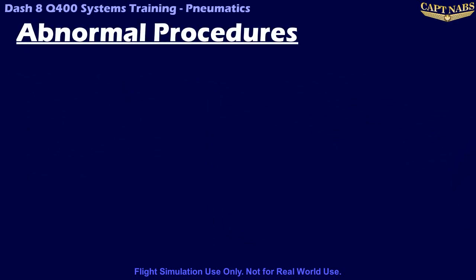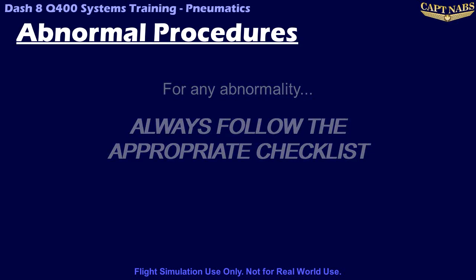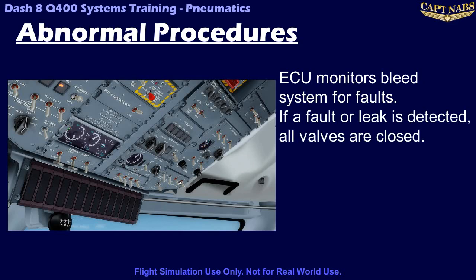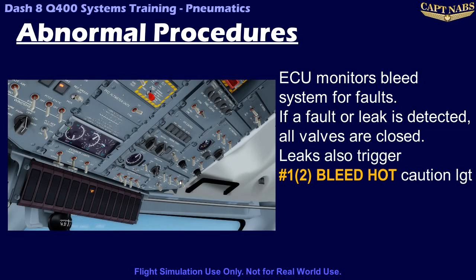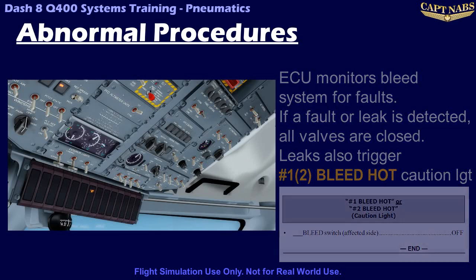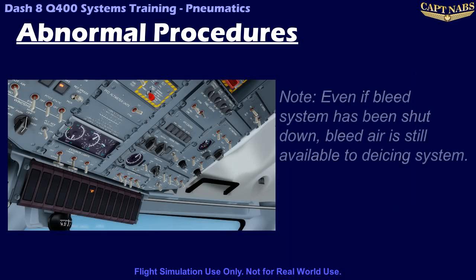There are only a very few abnormal operations for the aircraft bleed system. As always, follow the appropriate checklist. All channels of the ECU monitor the bleed system for faults, including over temperature or over pressure, as well as leaks. Leaks can be dangerous as the bleed air is very hot and can damage unprotected parts of the wing or fuselage. If either the digital or analog channel detects a problem with any of these systems, the ECU will shut down the bleed system by closing the nacelle shutoff valve and the high pressure shutoff valve and will illuminate the corresponding bleed hot number one or number two caution lights. The only action to take in this case is to turn off the corresponding bleed switch to ensure the faulty system remains deactivated. If both bleed hot caution lights illuminate, both bleed systems will deactivate and the aircraft will depressurize, thus requiring a descent to 10,000 feet. It is worth noting that even if the ECU has shut down a bleed system, the de-icing system can still override the command to close the high pressure shutoff valve and thus always ensures there is sufficient pressure for the de-icing system.